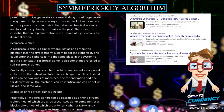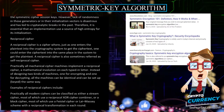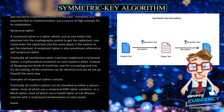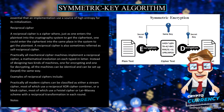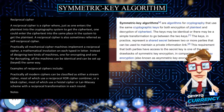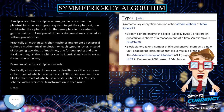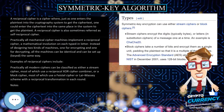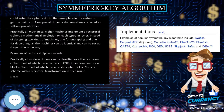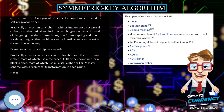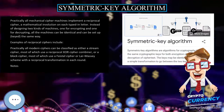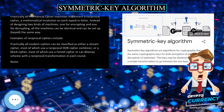Reciprocal Cipher: A reciprocal cipher is a cipher where, just as one enters the plaintext into the cryptography system to get the ciphertext, one could enter the ciphertext into the same place in the system to get the plaintext. A reciprocal cipher is also sometimes referred to as a self-reciprocal cipher. Practically all mechanical cipher machines implement a reciprocal cipher, a mathematical involution on each typed-in letter. Instead of designing two kinds of machines — one for encrypting and one for decrypting — all the machines can be identical and can be set up and keyed the same way.